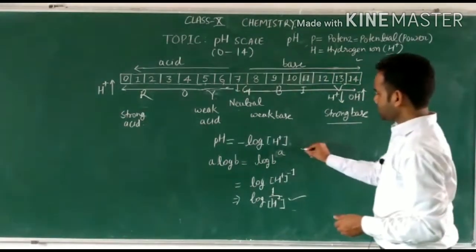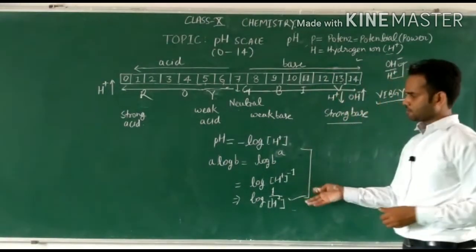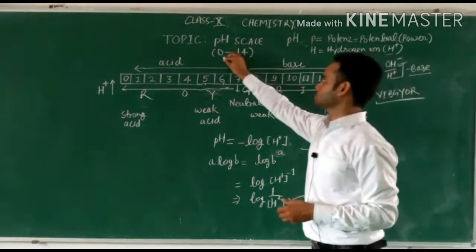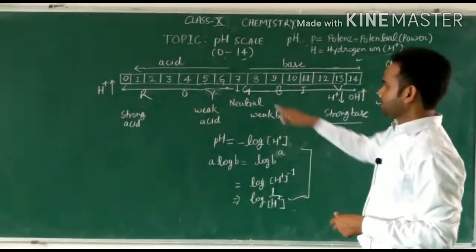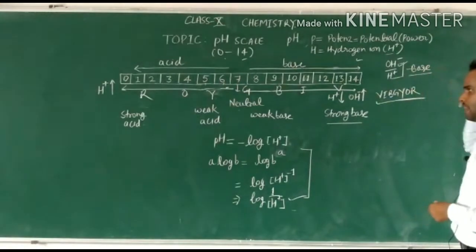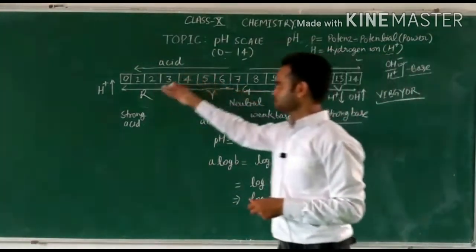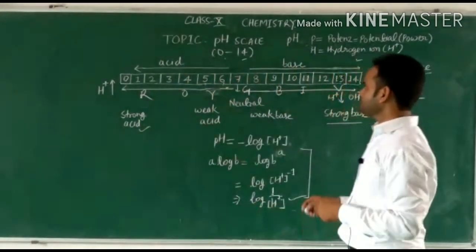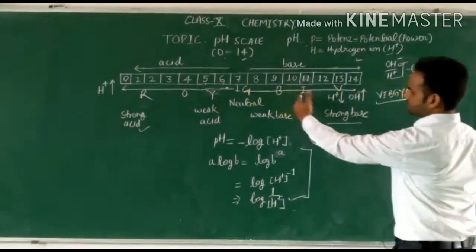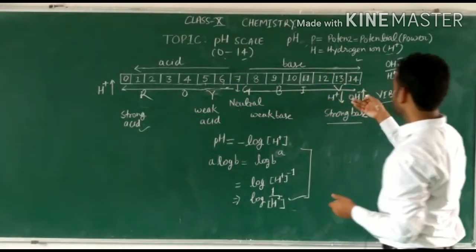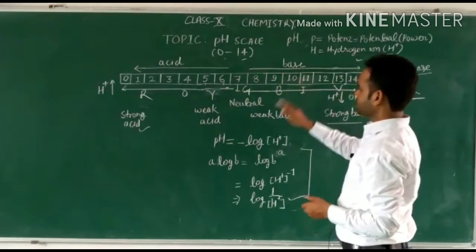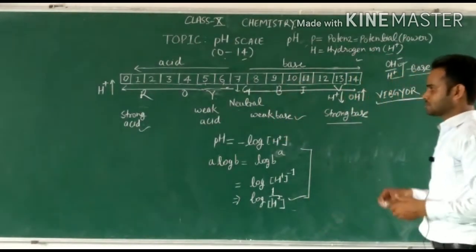You just have to know about the pH scale: the range is 0 to 14. Seven is for neutral, less than 7 for acid, more than 7 for base. If we go closer to 0, it would be strong acid; closer to 7 from the acid side, weak acid. On the base side, closer to 14 means strong base, and closer to 7 — like 8 or 9 — means weak base.